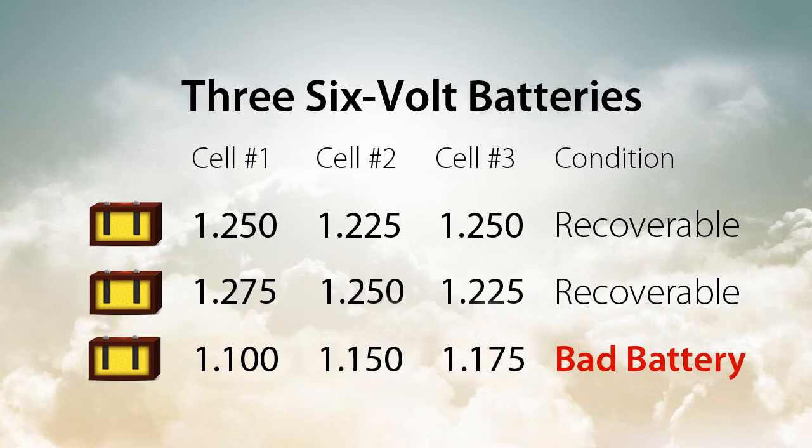In this example, battery C has an open cell because the difference between cell number 1 and cell number 3 is 0.075, more than 0.05.